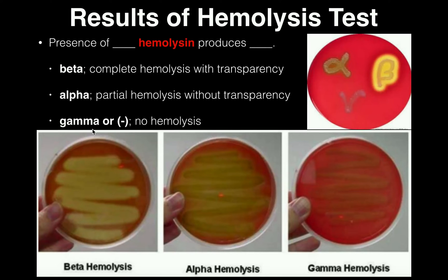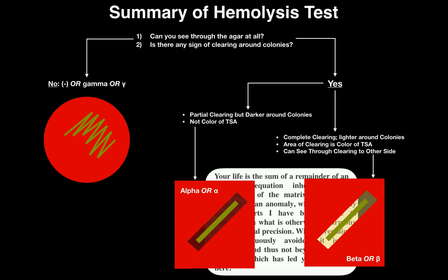Gamma hemolysis is really just our negative result. We usually either say no hemolysis, indicate it with a negative, or you'll see gamma — either written out or as the symbol. If you have gamma hemolysis in the area around the smear, you'll just see the red of the blood agar, and that's it. Gamma is pretty straightforward.